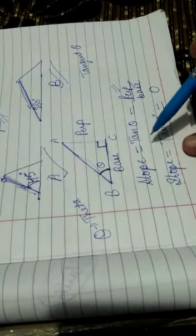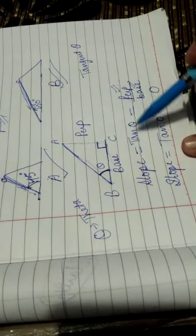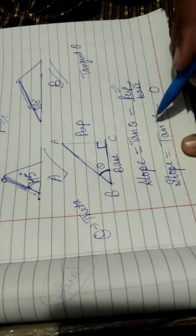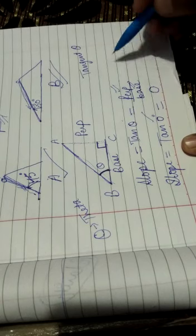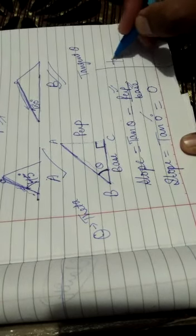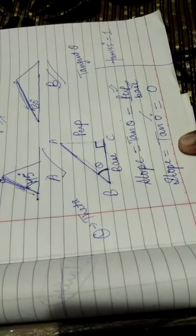So this tan will be having different values for different angles. You have to remember one or two very important ones. One is tan zero, that is zero. Tan 45 degrees, that is one.